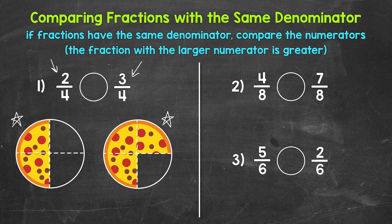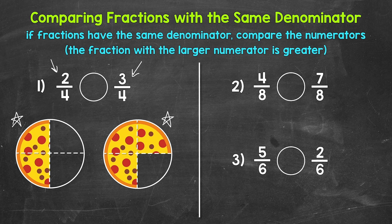Since both pizzas were divided into the same number of equal pieces — four — all we had to do was look at the numerators to see which pizza had more left. When we have the same denominator, we have wholes divided into the same number of equal pieces, so all we have to do when comparing is see which fraction has more pieces — which has a larger numerator. So three-fourths is greater. Remember, our comparison symbol always opens up towards whatever is greater, so we can read this from left to right as two-fourths is less than three-fourths.